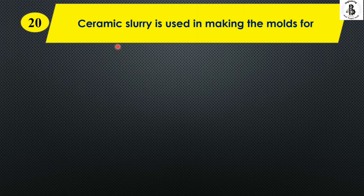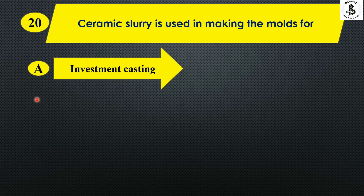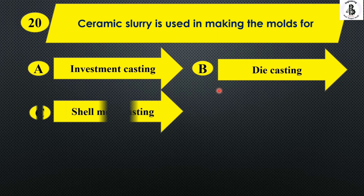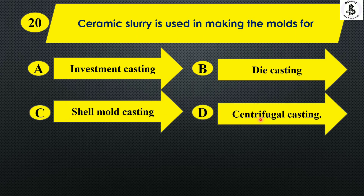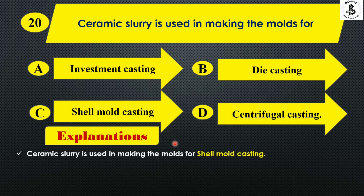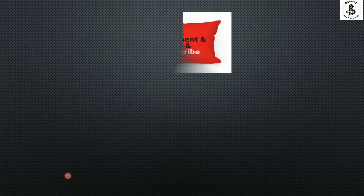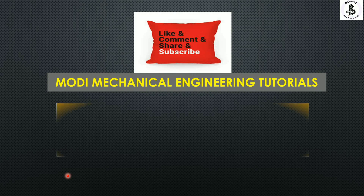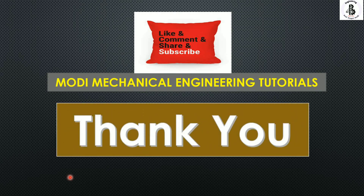Ceramic slurry is used in making molds for: Option A investment casting, Option B die casting, Option C shell mold casting, and Option D centrifugal casting. Ceramic slurry is used for making shell mold casting. So Option C. If you like this, then subscribe and share — Modi Mechanical Engineering Tutorials. Thank you so much and keep watching.